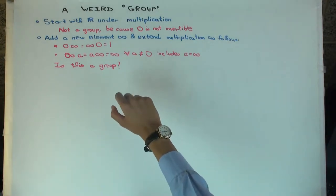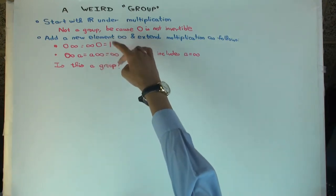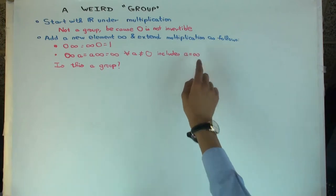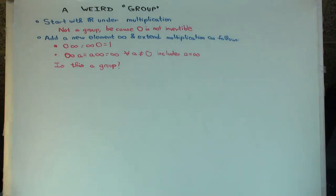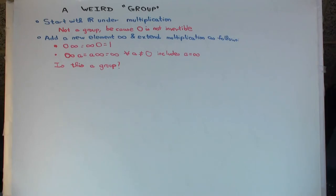Now you know what to do with any two inputs — both reals, you multiply them as usual; one of them is infinity, it falls into one of these cases. This also includes infinity times infinity. So is this a group? Checking all the conditions: it's associative, it has an identity, and everything has an inverse.